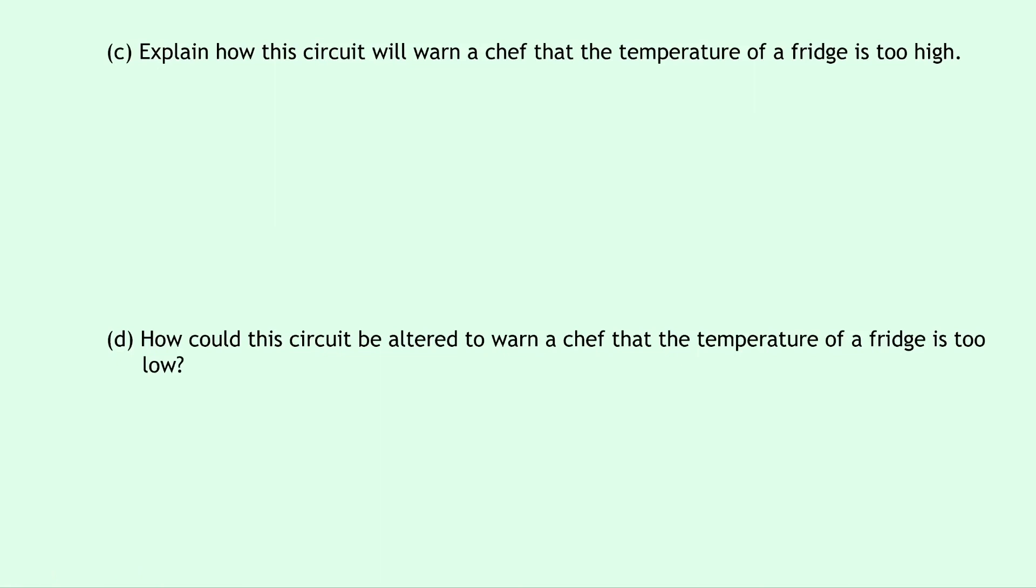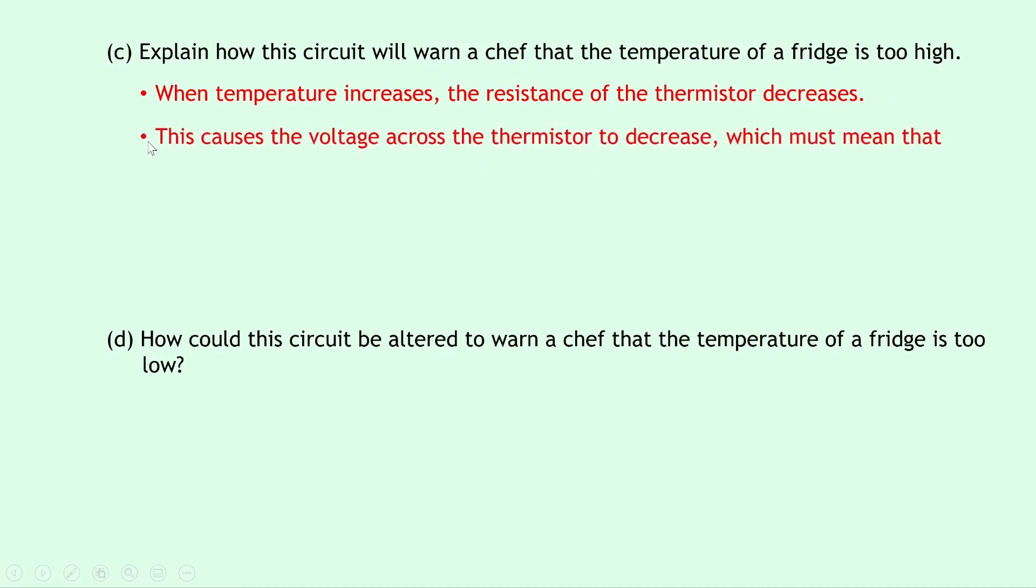Part C says to explain how this circuit will warn a chef that the temperature of a fridge is too high. Well, we want to start our explanation by thinking about the temperature getting too high, i.e. increasing. So we can say that when temperature increases, the resistance of the thermistor decreases. So remember that comes from the rule TURD for thermistors, temperature up, resistance down. So when temperature increases, the resistance of the thermistor decreases. If the resistance decreases, then this causes the voltage across the thermistor to decrease, because remember voltage will do whatever the resistance does, which must mean that the voltage across the variable resistor increases.